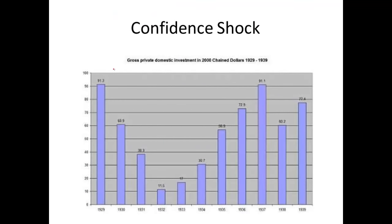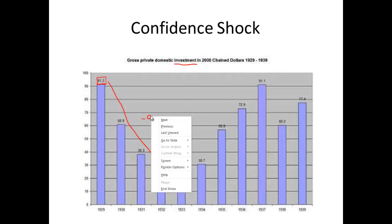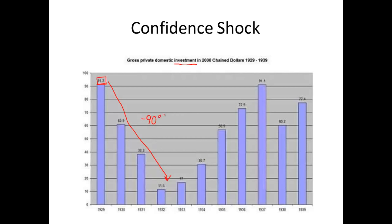We're really going to see the economic effect in investment. This chart shows gross private domestic investment from 1929 to 1939 — the decade of the Great Depression. Investment was $91 billion in 1929, a very healthy number, almost 10% of GDP. As the Depression gains steam, this number just falls off precipitously — something like an 80-90% decline in investment spending.